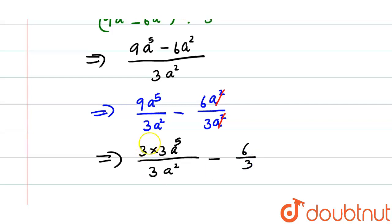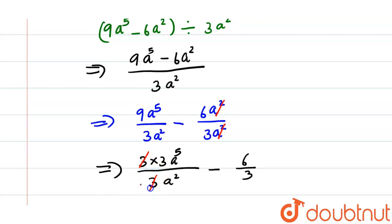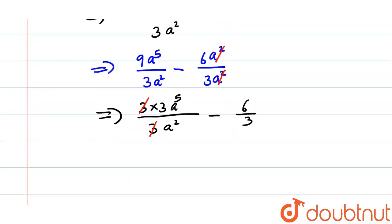Now we can cancel 3 and 3. This will be equal to 3a raise to 5 divided by a square minus, we can write 6 as 3 into 2 divided by 3, so that we can cancel 3 and 3.